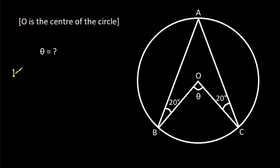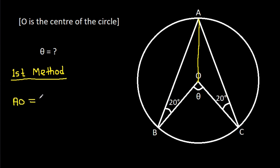The first method: if we join AO, then AO will be equal to BO, which will be equal to CO — that is, they are all radii. So AO is equal to BO, which is equal to CO.